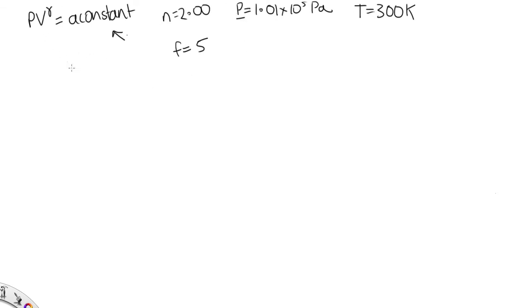To work out V, we should use the ideal gas law, PV is equal to nRT, which tells us that V is equal to nRT over P. So n is 2, R is 8.314, T is 300, and the pressure is 1.01 times 10 to the 5.